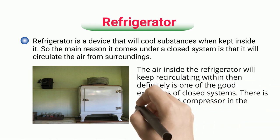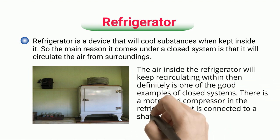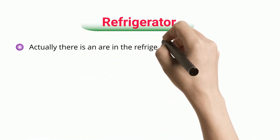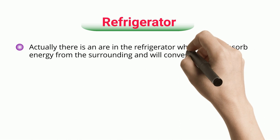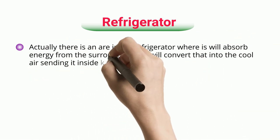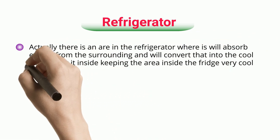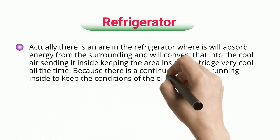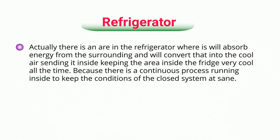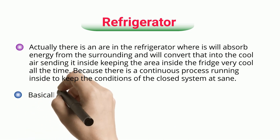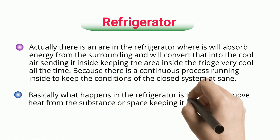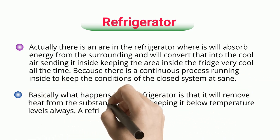There is a motor and compressor in the refrigerator connected to a shaft within. A refrigerant inside the refrigerator absorbs energy from the surrounding and converts that into cool air, sending it inside and keeping the area inside the fridge very cool all the time, because there is a continuous process running inside to maintain the conditions of the closed system. Basically, the refrigerator removes heat from the substance or space, keeping it below set temperature levels.